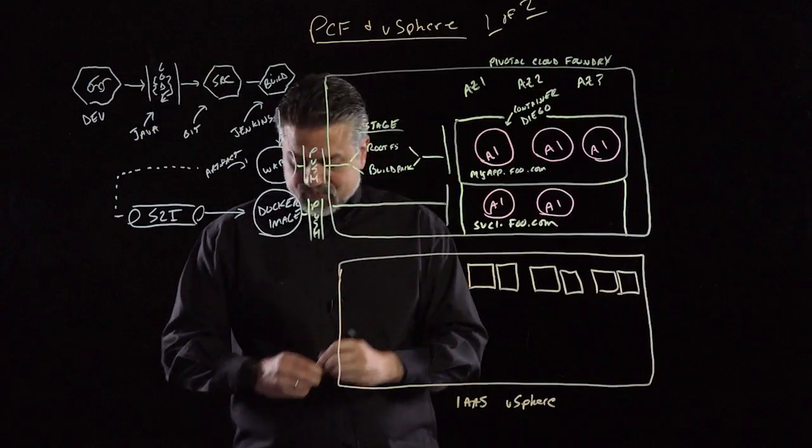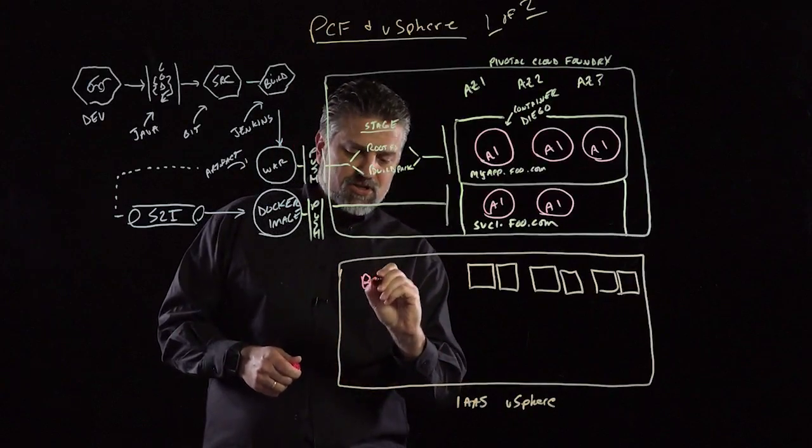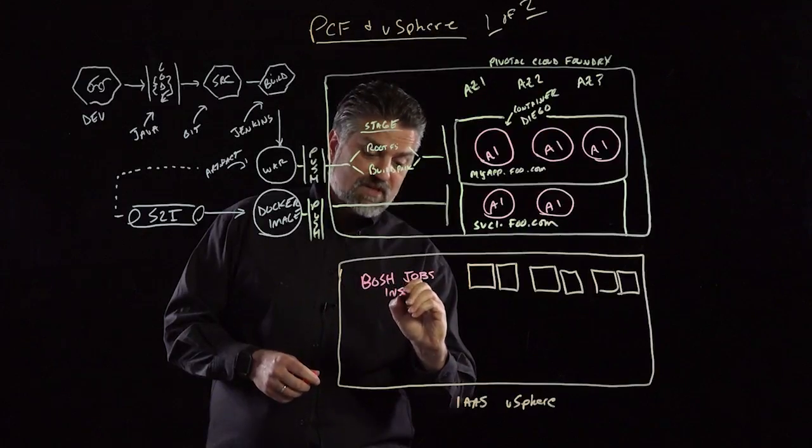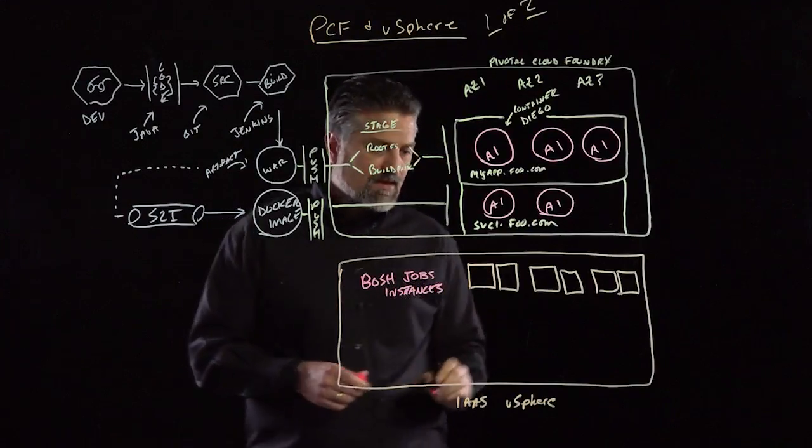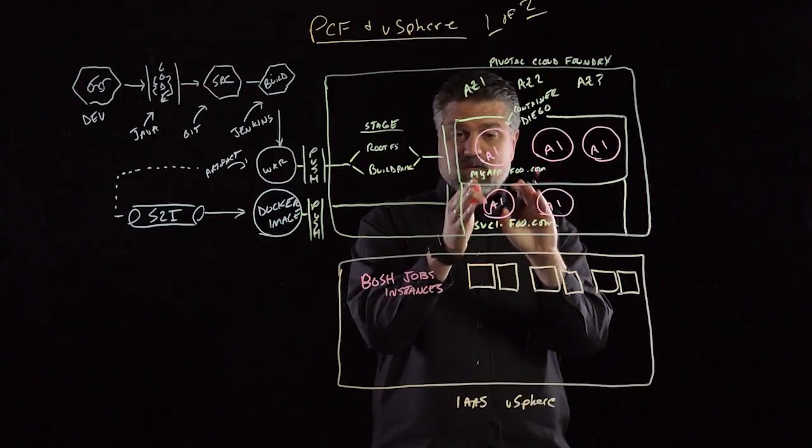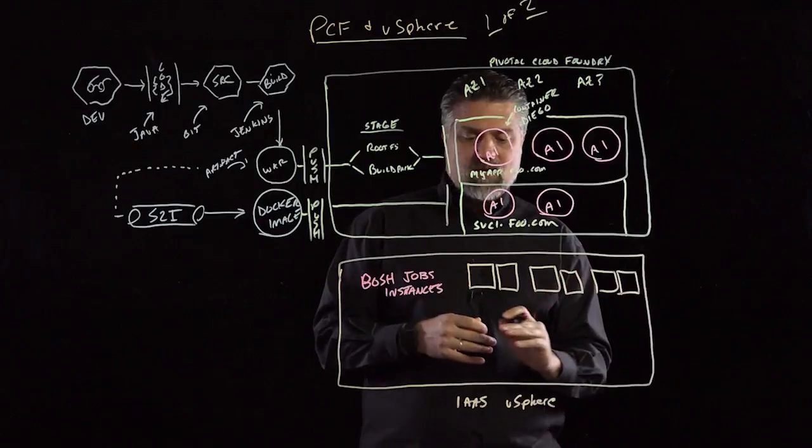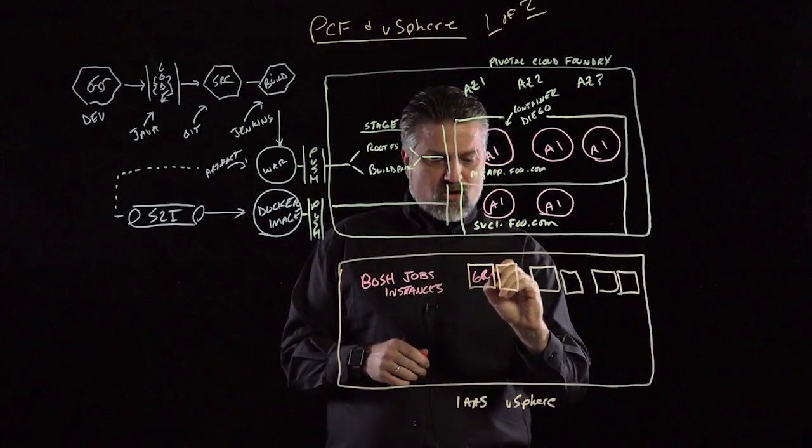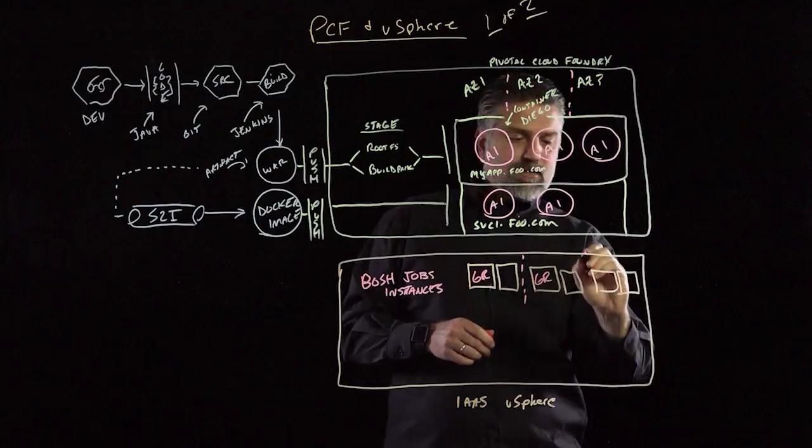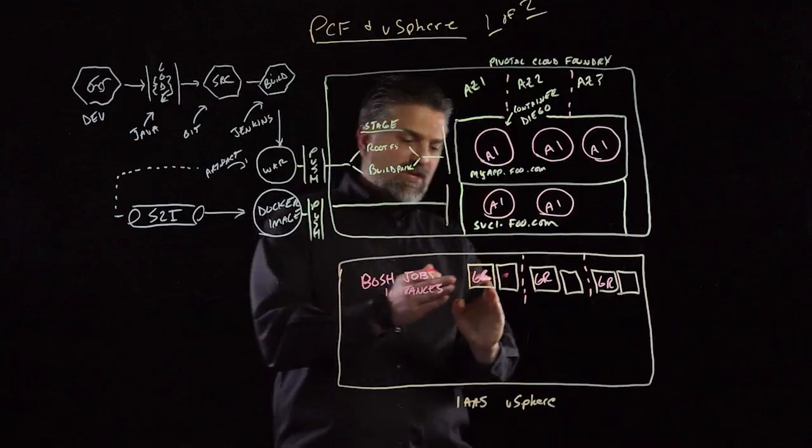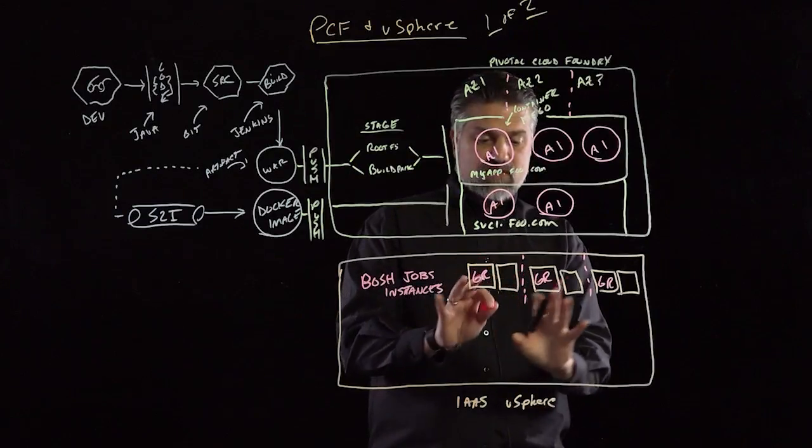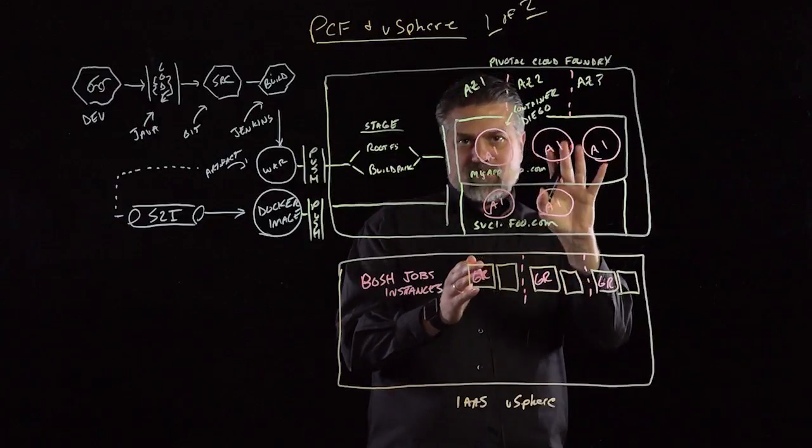And so there's a component called BOSH. And so BOSH will actually create and assign jobs or roles to these instances or VMs. In particular types of jobs, for example, the routing components. You know, what allows Cloud Foundry to be able to say, hey, when I get a request for myapp.foo.com, where does it go? Those routing components are going to be spread across our availability zones. So we're just putting GR for GoRouter here. And using this construct, BOSH ensures that we have our jobs spread across physical fault domains. So if we do incur a physical failure in our backing infrastructure for Cloud Foundry, Cloud Foundry can still function and our application instances still stay up.